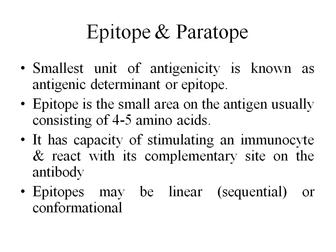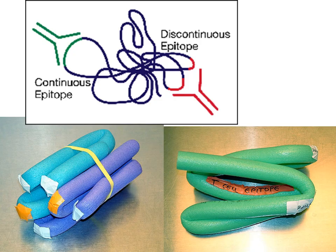There are two types of epitopes: one is a linear or sequential epitope, and another is a conformational epitope. The conformational epitope means different amino acids located at different points in the peptide chain come together to form a conformational epitope, which is recognized by the antigen-presenting cell or combines with the corresponding antibody.